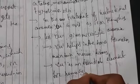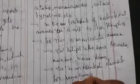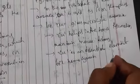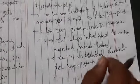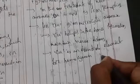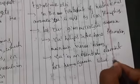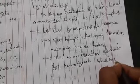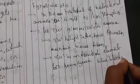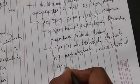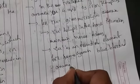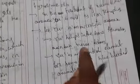Copper is also essential for hemocyanin, which is a respiratory pigment mainly used by blue-blooded animals.